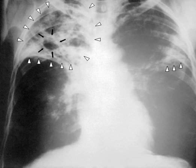Those at high risk include people who inject illicit drugs, inhabitants and employees of locales where vulnerable people gather such as prisons and homeless shelters, medically underprivileged and resource-poor communities, high-risk ethnic minorities, children in close contact with high-risk category patients, and health care providers serving these patients. Chronic lung disease is another significant risk factor. Silicosis increases the risk about 30-fold.